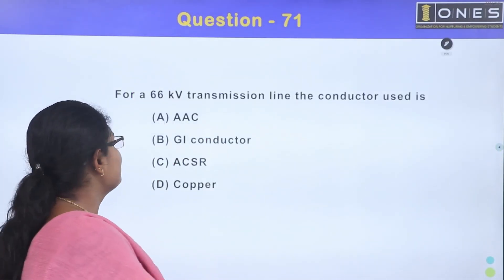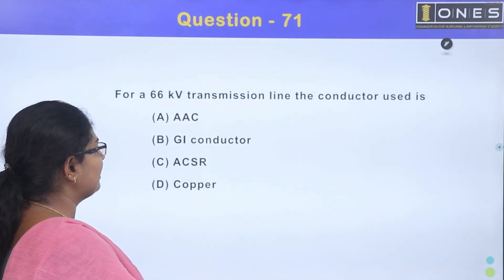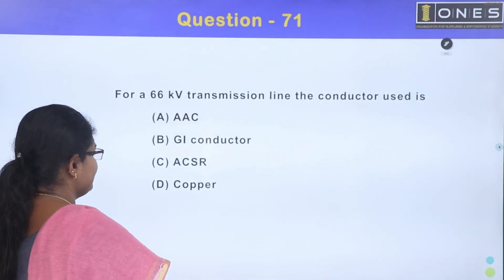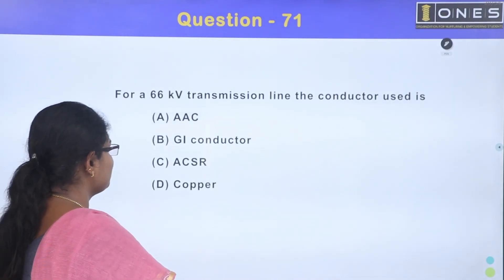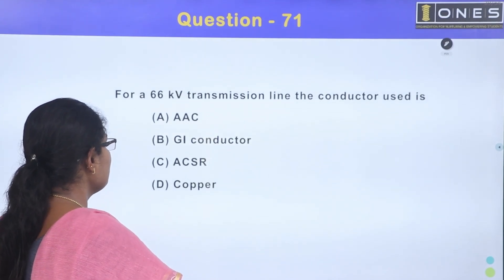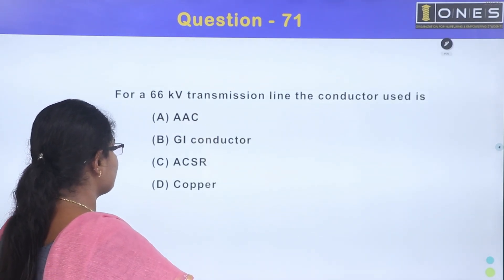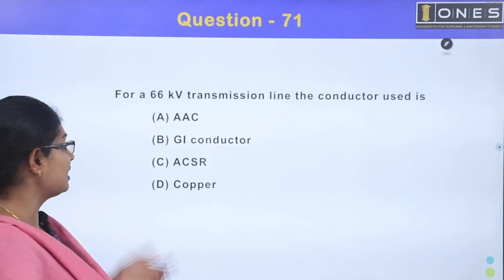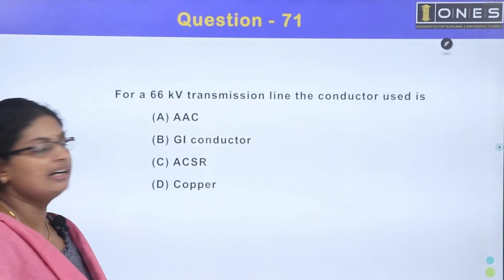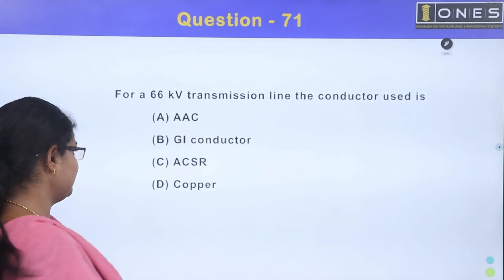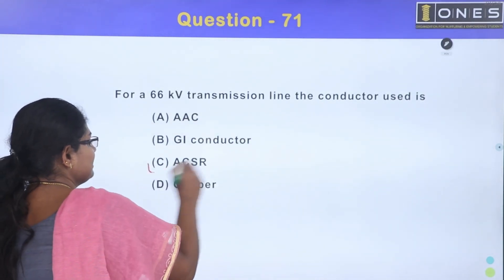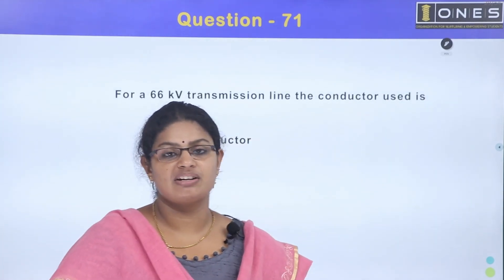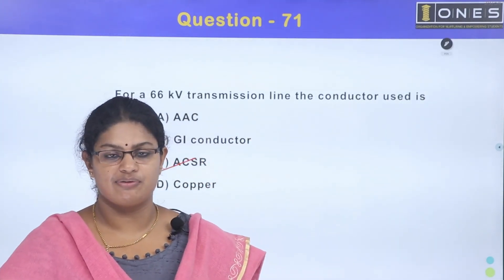For a 66 KV transmission line, the conductor uses: Option A, AAC; Option B, GI Conductor; Option C, ACSR; Option D, Copper. The answer is ACSR — Aluminium Conductor Steel Reinforced.